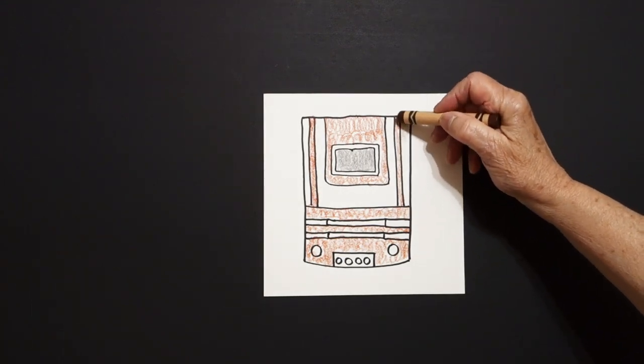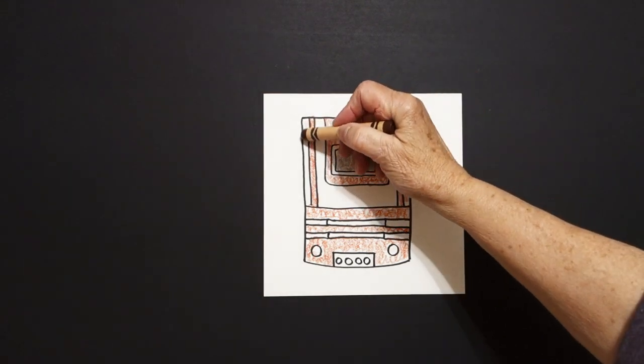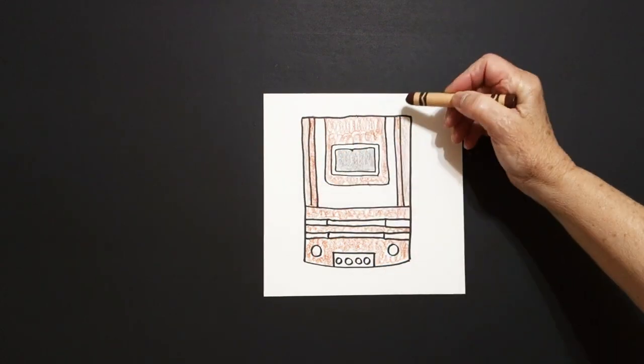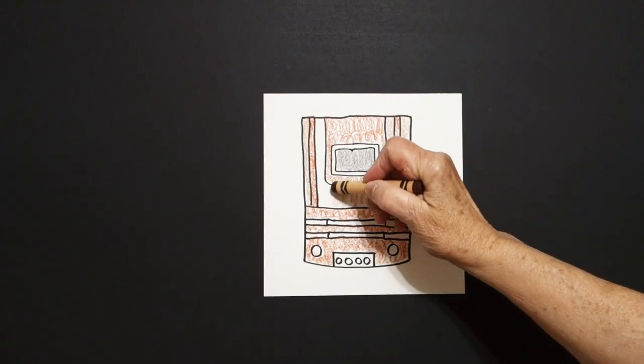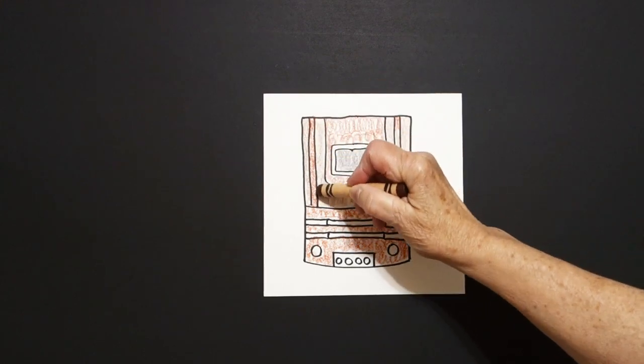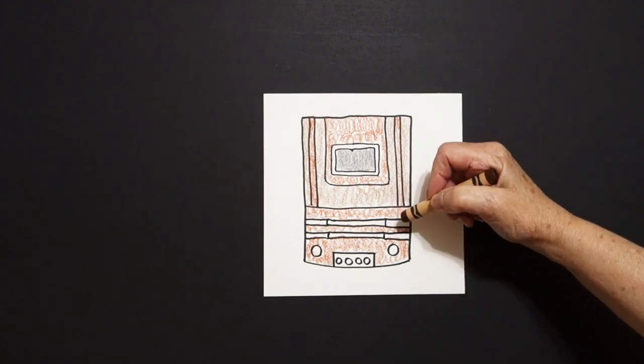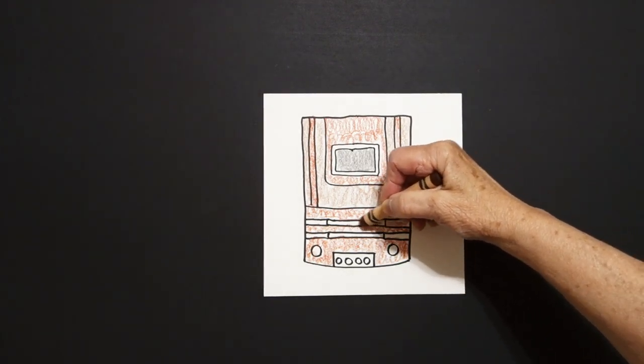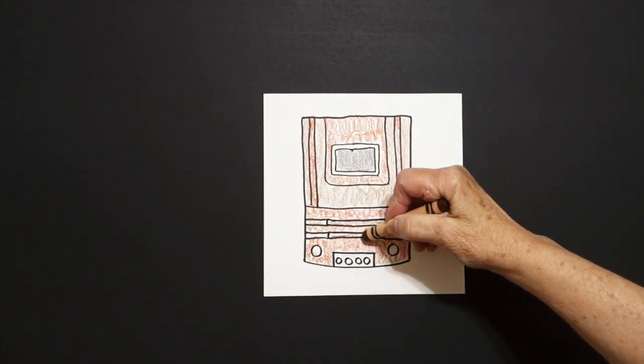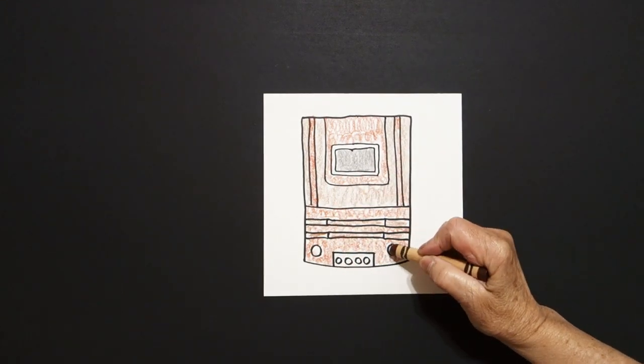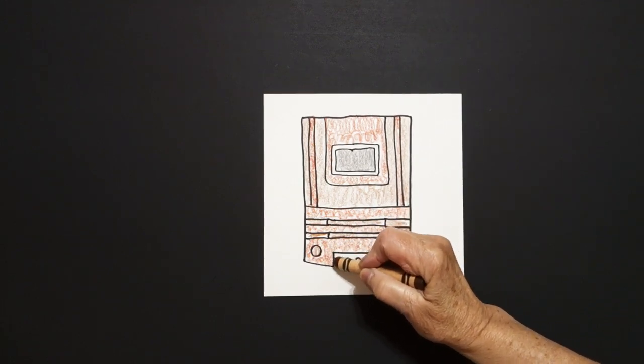Now I'm going to use a regular brown and color in some other spaces. And like I said, if you don't have browns, a bunch of different browns, you can use oranges, yellows. But I want you to know that the whole entire case of the TV set was made out of wood. I'm going to make this brown, this brown, this brown.